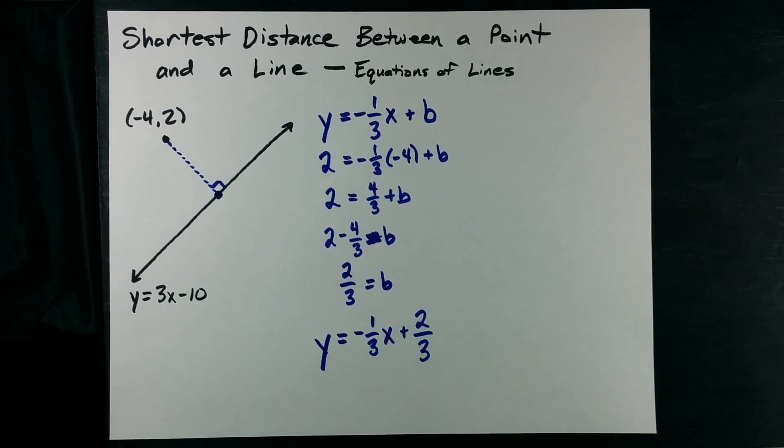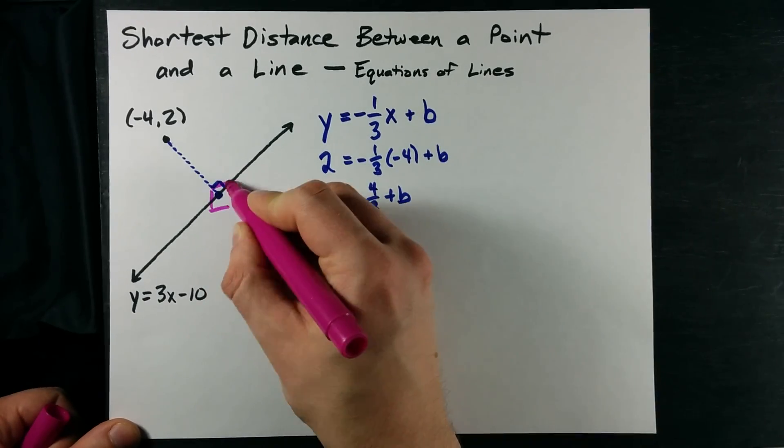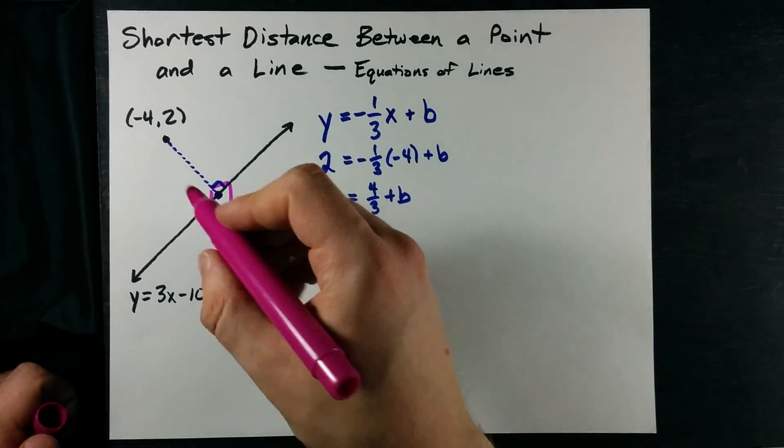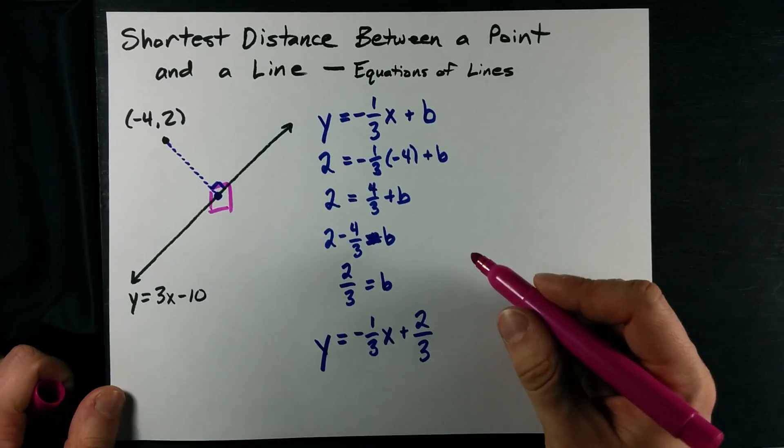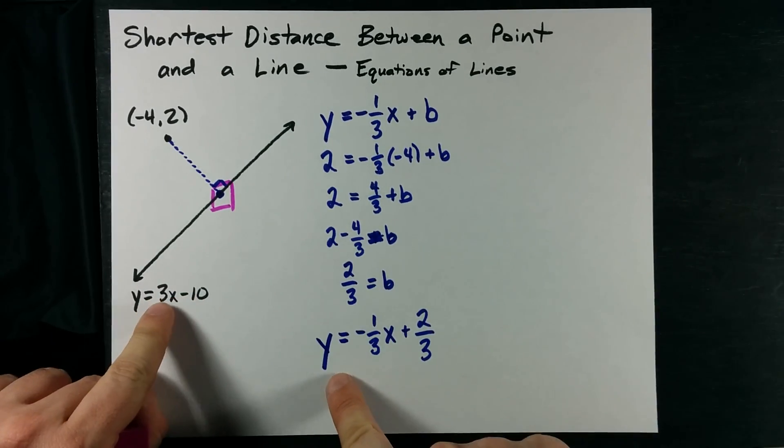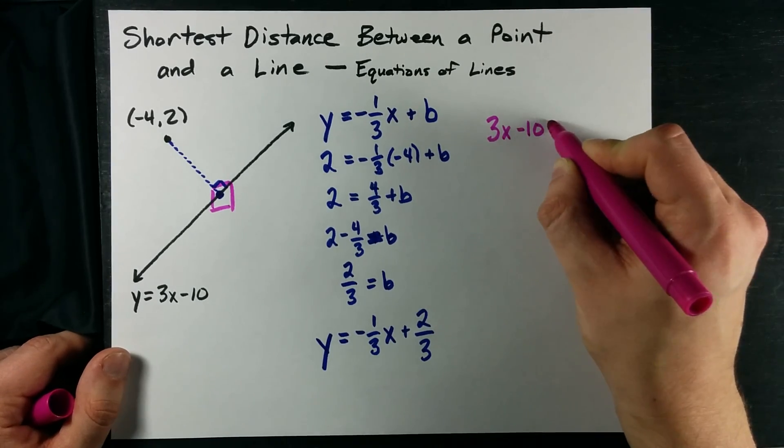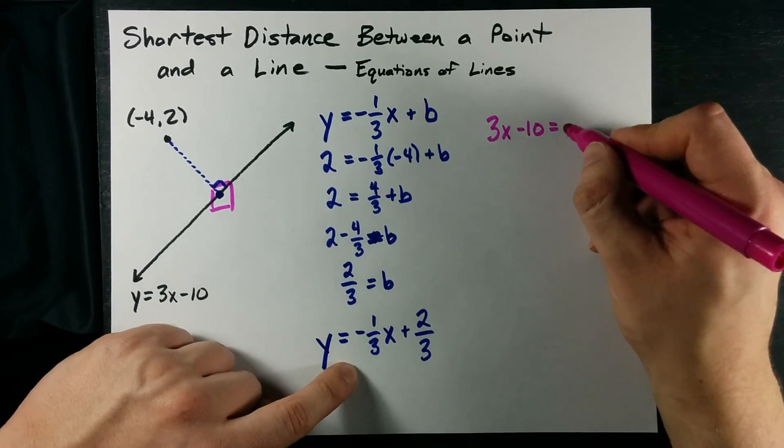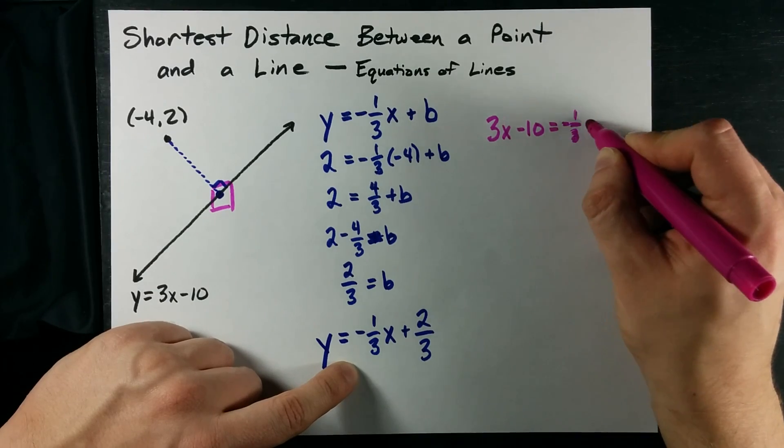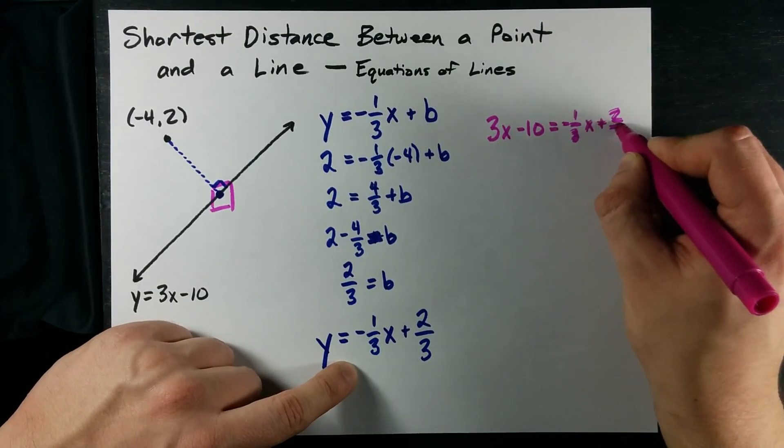Now, in order to get the coordinates of this point, we need to find the point of intersection. Because both of these are in y equals mx plus b form, I can just set them equal to each other. 3x minus 10 equals negative 1 third x plus 2 thirds.